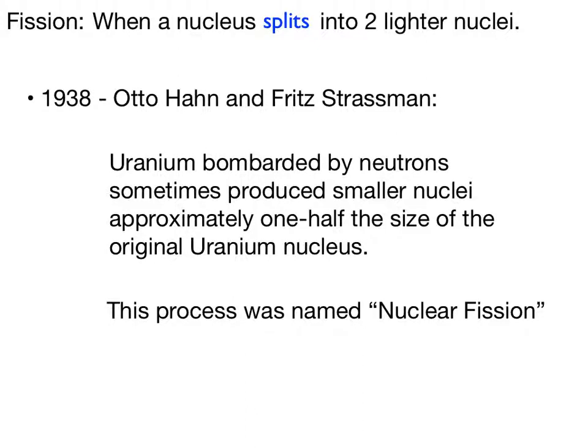In 1938, Otto Hahn and Fritz Strassmann showed that when uranium atoms are bombarded by neutrons, they sometimes produced smaller nuclei, about half the size of the original uranium atoms. This process was dubbed nuclear fission.